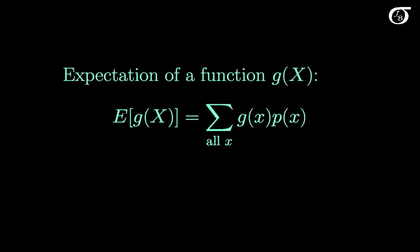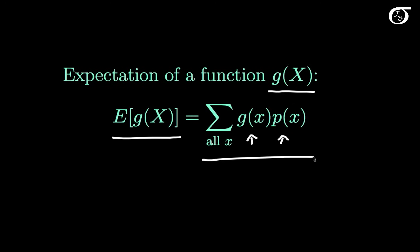This can be extended to the expectation of some function of the random variable. Here g represents a function of the random variable — it could be x squared, the square root of x, log x, or something along those lines. The expectation of a function of the random variable is found by taking the values of the function, multiplying them by the probability of those values occurring, and adding that up over all x.